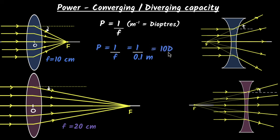And so you'll get 10 diopters. 10 meter inverse, 10 diopters, that's the power, that's the converging power of this lens. All right, now can you pause the video and find the power of this lens? Pause and try yourself.